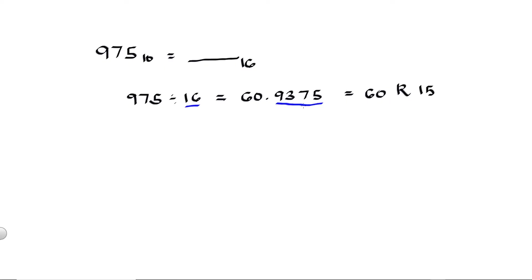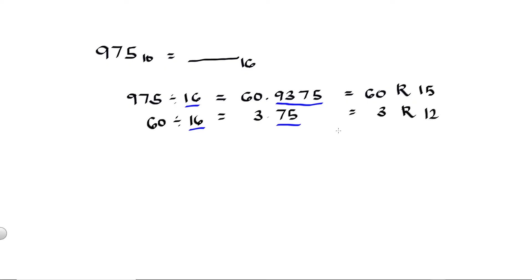Then we take 60 and divide it by 16. 60 divided by 16 is equal to 3.75, so we have 3. To get the remainder, multiply 0.75 by 16, which equals 12. So we have 3 remainder 12. Then we take 3 and divide it by 16. Since 3 is less than 16, the answer is 0 and remainder 3.